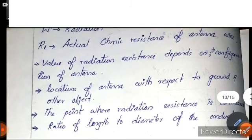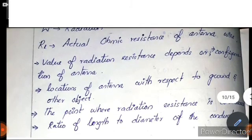To summarize, the value of radiation resistance depends on the configuration of the antenna, the location of the antenna with respect to ground and other objects, and the point where radiation resistance is considered.